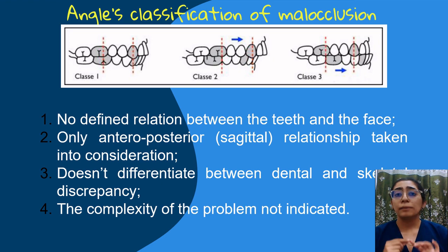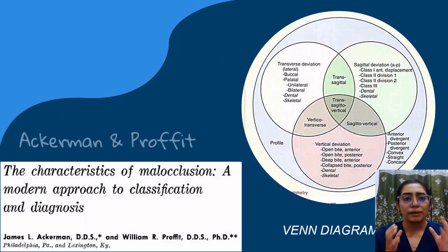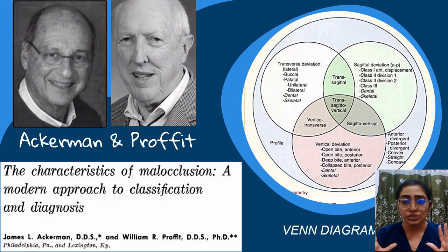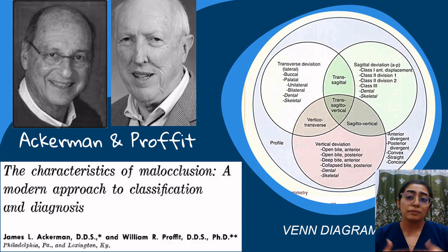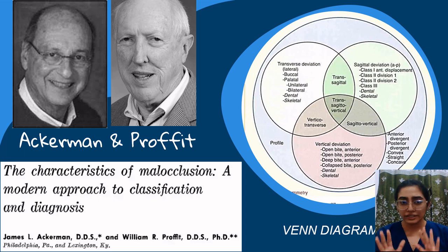Fourth, the complexity of the problem is not indicated. In order to enhance Angle's classification, Ackerman and Proffitt published an article titled 'The Characteristics of Malocclusion: A Modern Approach to Classification and Diagnosis' in 1969, in which they described malocclusion using five characteristics and their interrelationships using a Venn diagram for visual representation.